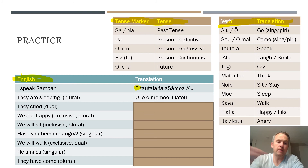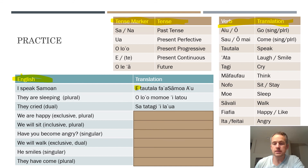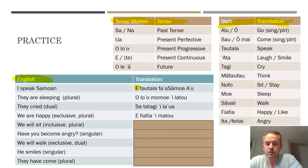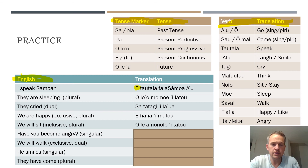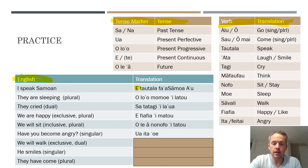Next: 'they cried,' referring to two people. In Samoan: sa tautangi ilā. Then 'we are happy,' using the exclusive first person plural pronoun: e fiafia imātou. Next: 'we will sit,' using the inclusive plural pronoun: ole'a nonofo itātou. And 'have you become angry?' using the singular 'you' pronoun: ua ita oe — with the question intonation going up and then dropping off at the very end: ua ita oe?